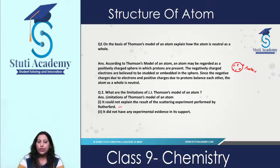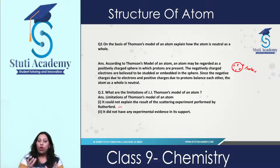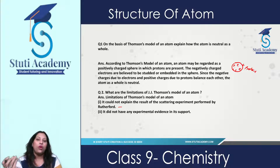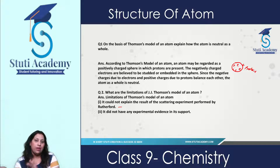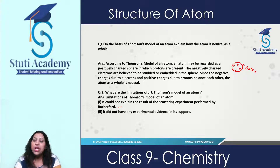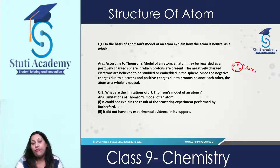The Thomson model generally comes in two-mark questions. Sometimes questions can be combined — 'Explain the J.J. Thomson model and write down its limitations' — then the entire answer comes in three marks. In that question, you need to explain the Thomson model in detail along with its failures or limitations. The main limitation is that he failed to explain the stability concept of an atom.